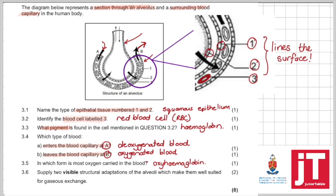Supply two visible structural adaptations so this is important visible structural so we have to be able to see it in the diagram that allow or that make alveoli well suited for gas exchange. Two visible structural adaptations.